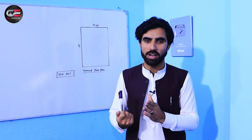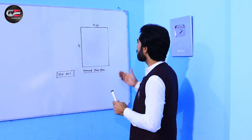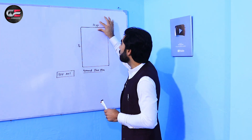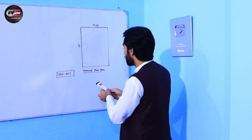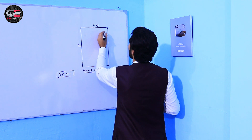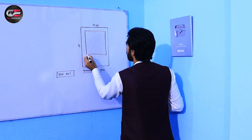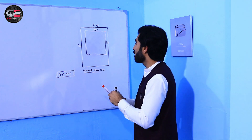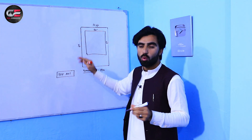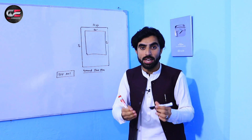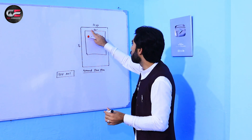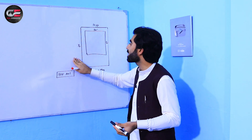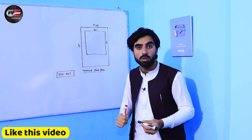First of all, I will give you some important information about this drawing. The plot size is 50 by 90 feet. The second size — for the house plan — is 40 feet by 50 feet. So we have two sizes here: the plot size and the covered area planned for the house, which is 40 by 50 feet. I'll discuss this in the video using AutoCAD software.